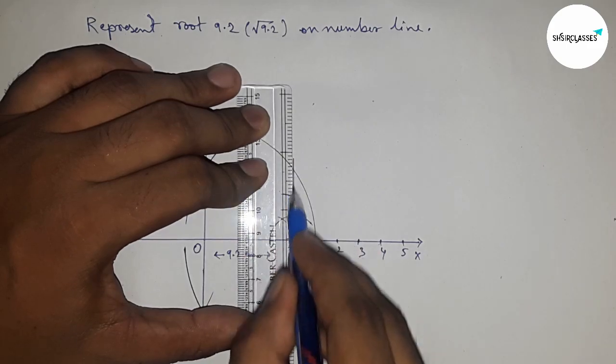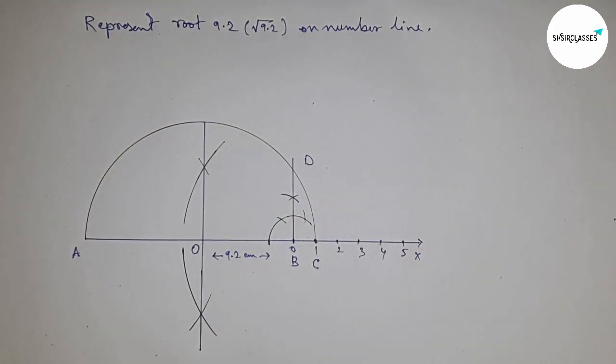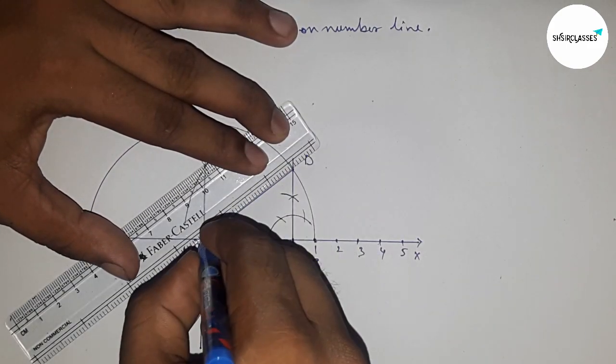Now join this to get a 90 degree angle which meets the semicircle at point D.